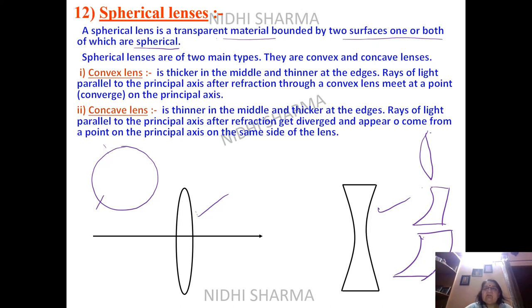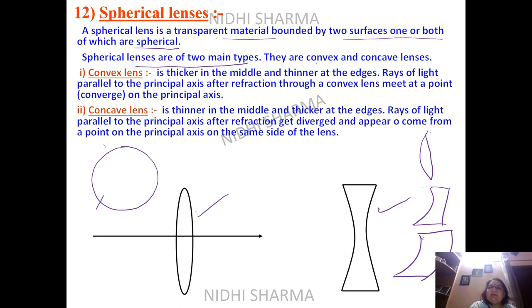In this way, you can have different varieties. But in your syllabus, spherical lenses are of two main types: convex and concave lenses, which are known as double convex and double concave.